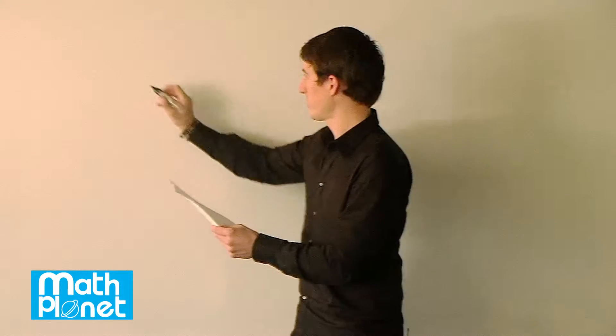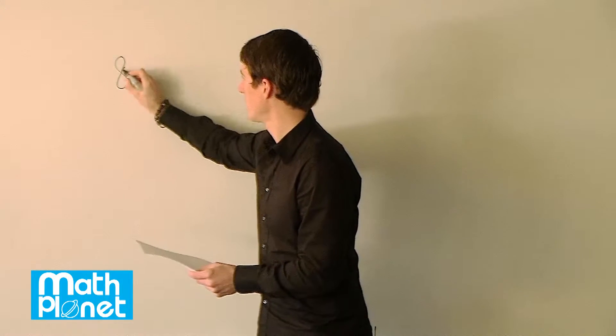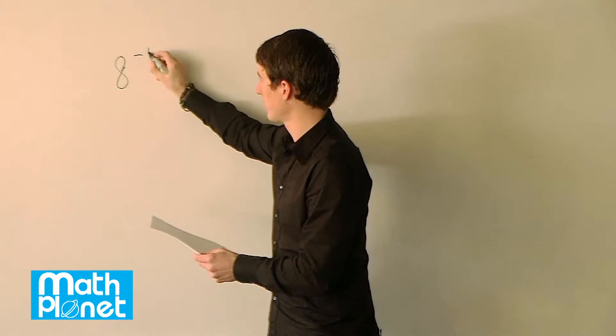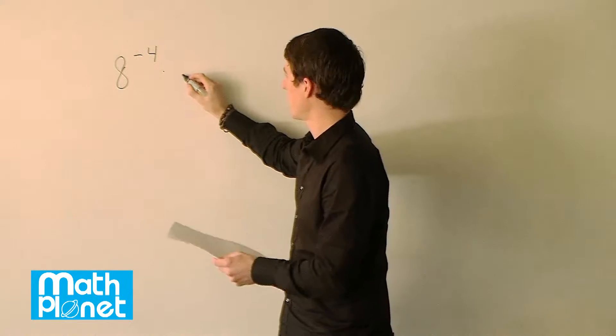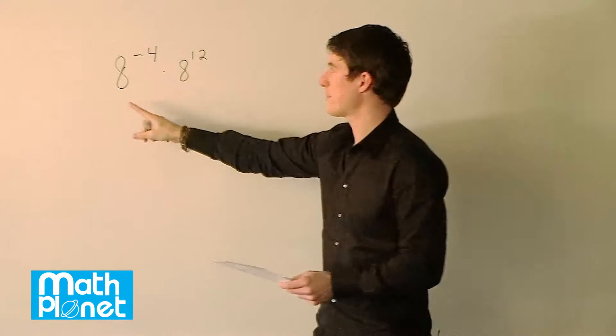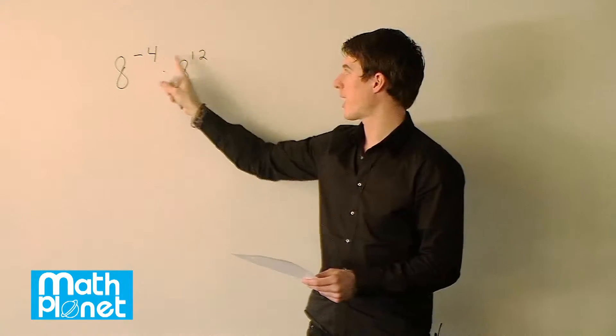For this problem we want to simplify the following expression: 8 to the negative 4 times 8 to the positive 12. So we have the same base here and different powers.